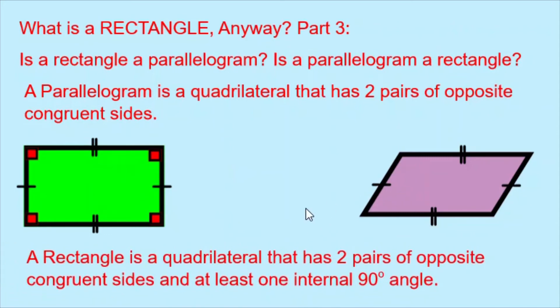A rectangle is a quadrilateral that has two pairs of opposite congruent sides and at least one internal 90 degree angle. Our green rectangle is obeying this rule but the purple parallelogram is not. This particular parallelogram is not a rectangle because it lacks the internal 90 degree angle.